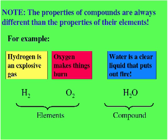The properties of compounds are always different than the properties of their elements. For example, hydrogen is an explosive gas. Oxygen makes things burn, but together they form water, which is a clear liquid that puts out fires.